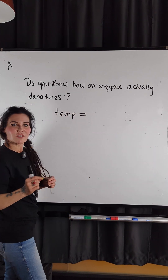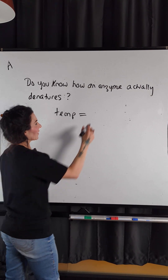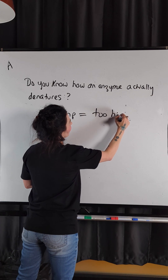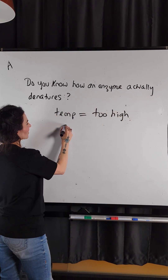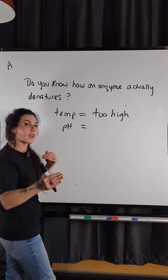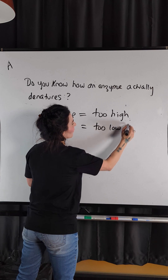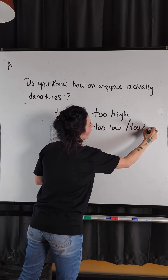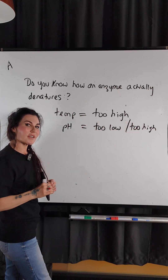Temperature causes denaturing if it's too high. pH, on the other hand, can work either way. If it's too low for the enzyme or too high for the enzyme, it can also lead to denaturing.